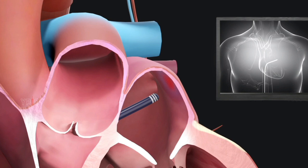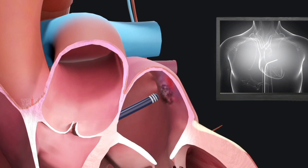Your physician utilizes this information to determine where to apply the ablation. Once the source of the problem has been identified, your physician will use electrical, or sometimes cold, energy to destroy the problem area in the heart, eliminating the heart rhythm problem.